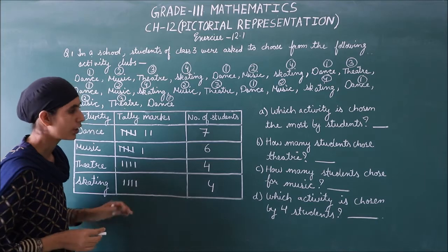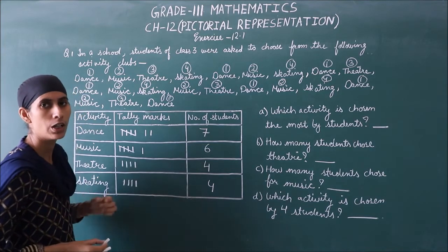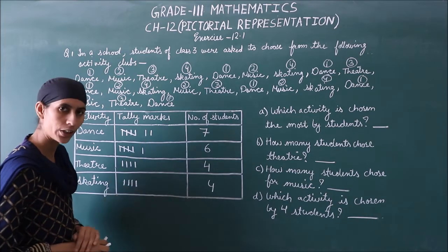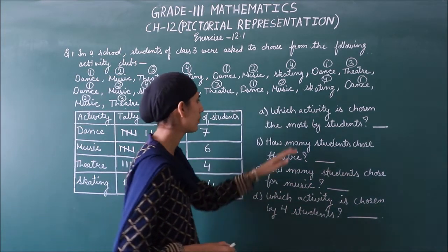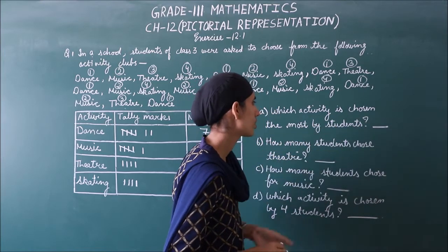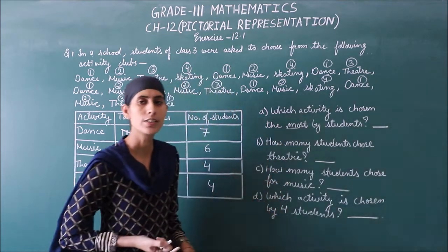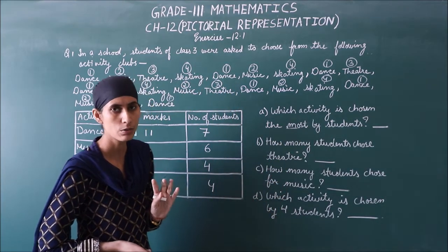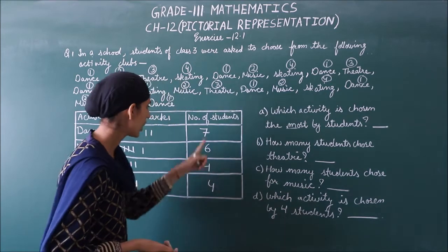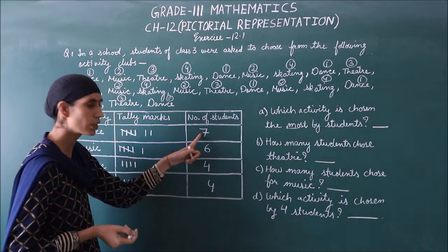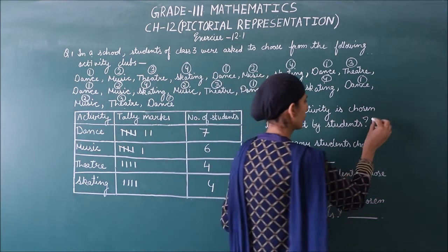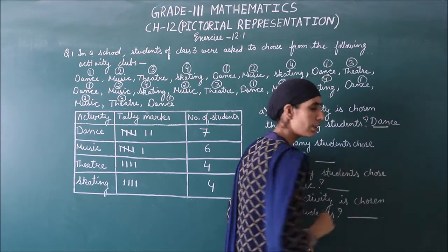That completes one part of the question. Now there are sub-questions we need to answer. First question: which activity is chosen the most by students? 'The most' means which activity was most popular — the one with the highest number of students. Checking the data, the highest is 7, which belongs to dance. So the answer is: Dance.